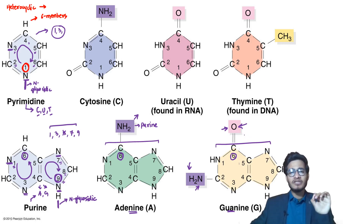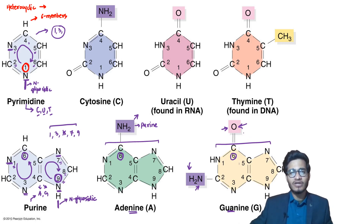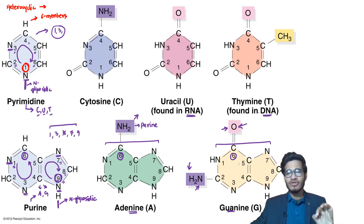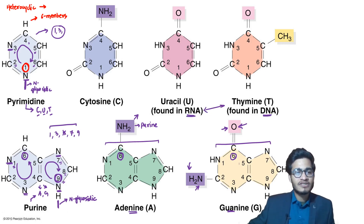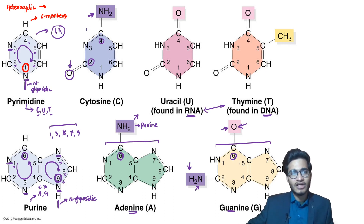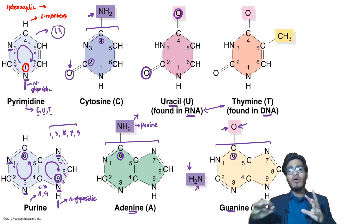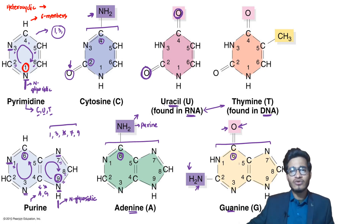The most important thing to understand is the backbone structure of purine and pyrimidine. For the pyrimidines — cytosine, uracil, and thymine — uracil is found only in RNA and thymine only in DNA; they can never be present together. Cytosine has an oxo group at the 2nd position and an amino group at the 4th position, making it 4-amino-2-oxo-pyrimidine. Uracil has oxo groups at both the 2nd and 4th positions, making it 2,4-dioxo-pyrimidine.